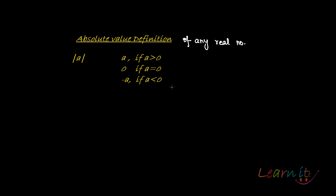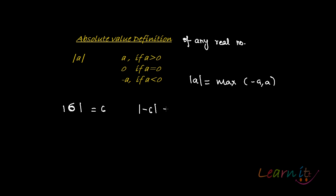Alternatively, we can define it as the maximum of minus A and A — whatever is the maximum is its absolute value. For example, the absolute value of 6 is 6, and the absolute value of minus 6 is minus of minus 6, which is 6 again.